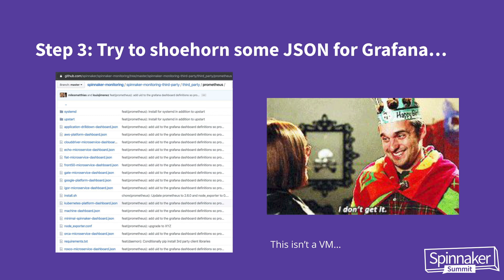The Spinnaker monitoring repo on GitHub has a bunch of awesome Grafana dashboards you can use right away — they're all JSON files. If you're in VM land, you can upload them, or even do kubectl cp to upload them to a running Grafana pod. But in the Kubernetes world, we don't want a pet pod — if you delete it and a new pod comes up, all those graphs are gone. So we want these as YAML manifests or some kind of infrastructure as code. That's step three: shoehorning this big pile of JSON to get all those Grafana dashboards.